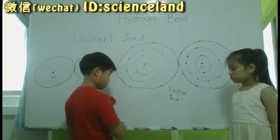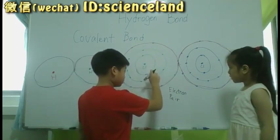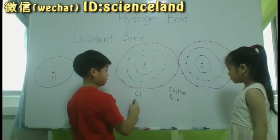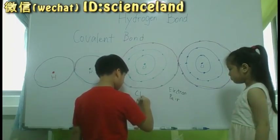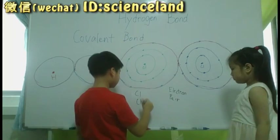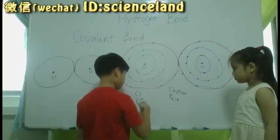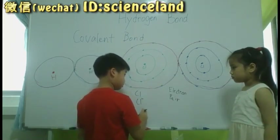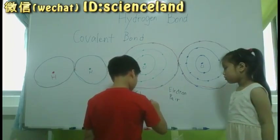This is chlorine, right? C-L. Chlorine. C-L. If it gains one electron, what is your minus — which is an ion.